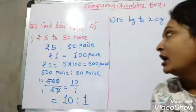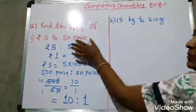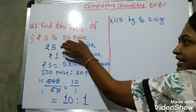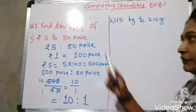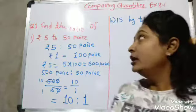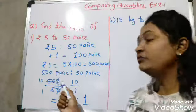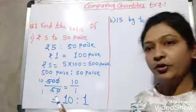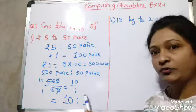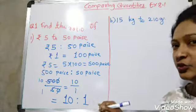Understand students? First, rupees 5 was in rupees, and since the second quantity — 50 paise — was in paise, we converted rupees 5 into 500 paise. After that, 500 upon 50 gives us 10 upon 1 after division. So the ratio is 10 is to 1.